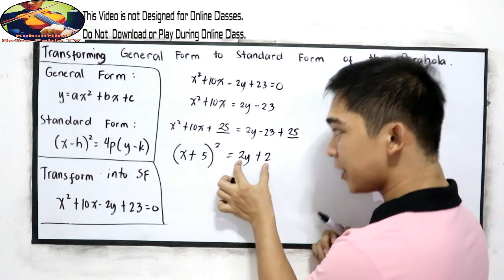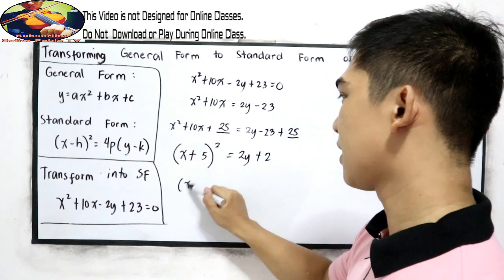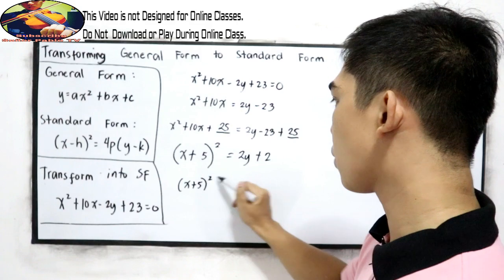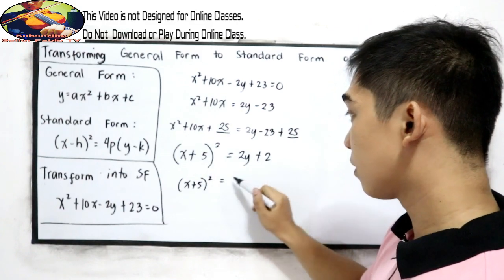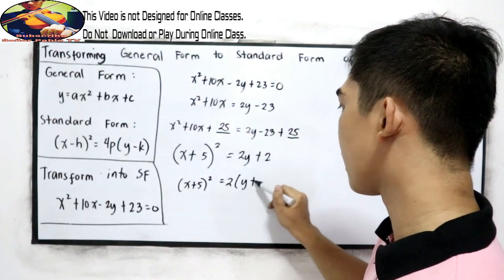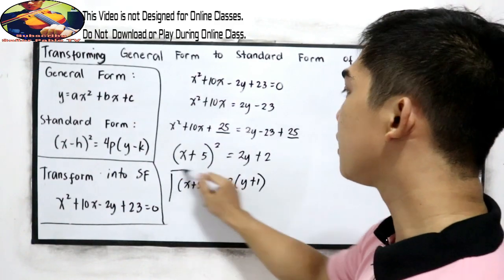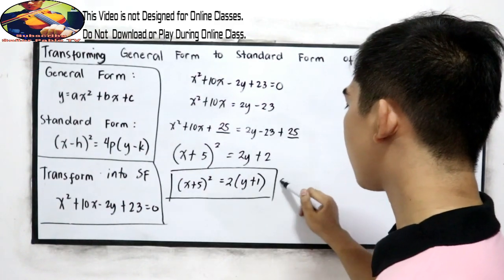So, common factor, copy x plus 5 squared is equal to, common factor is 2, now we have y plus 1. This is now our standard form.